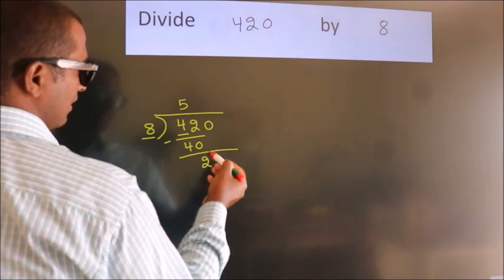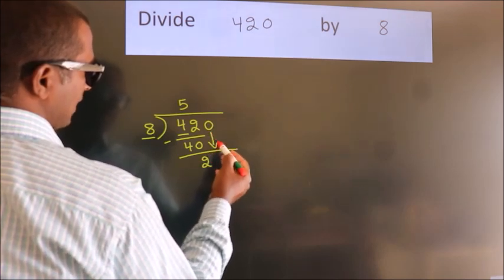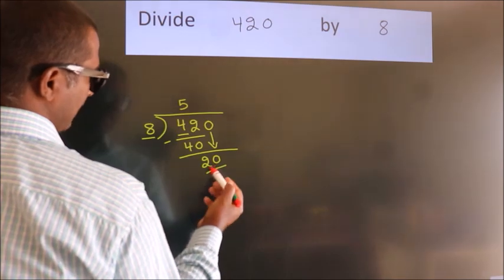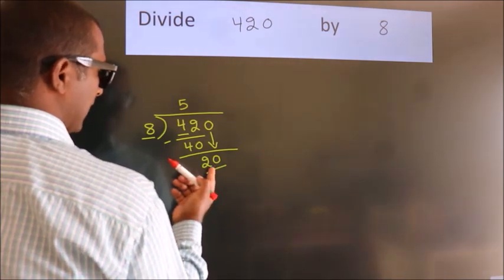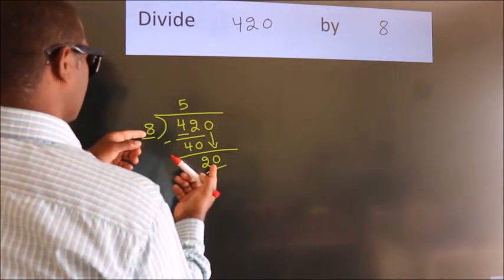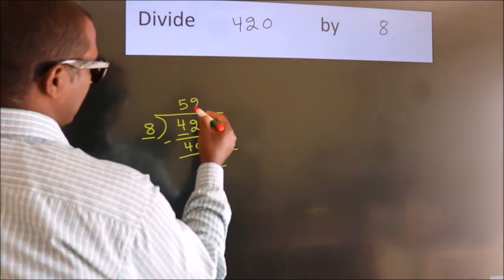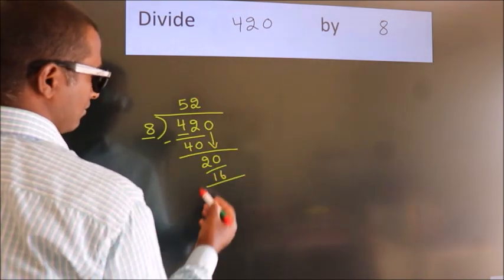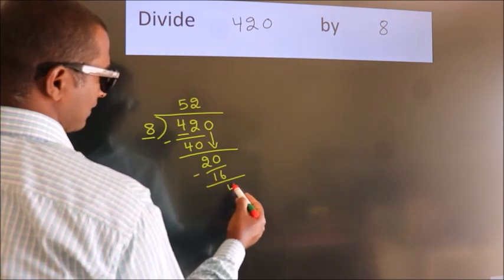After this, bring down the beside number. So 0 down, so 20. A number close to 20 in the 8 table is 8 twos 16. Now we subtract. We get 4.